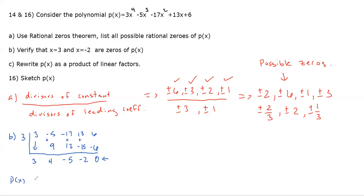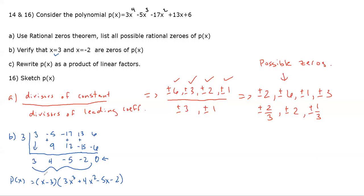Synthetic division also lets us rewrite P(x) as (x − 3)(3x³ + 4x² − 5x − 2). Now we check x = −2, which should be a zero of the cubic 3x³ + 4x² − 5x − 2. Using synthetic division on −2 with coefficients 3, 4, −5, −2.